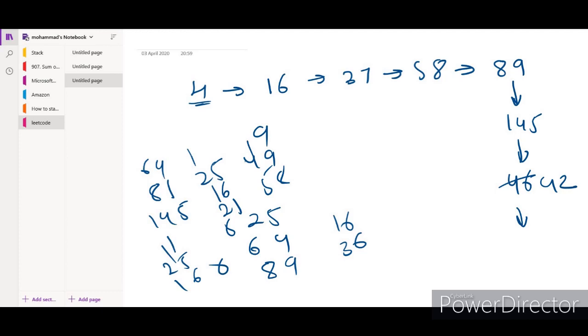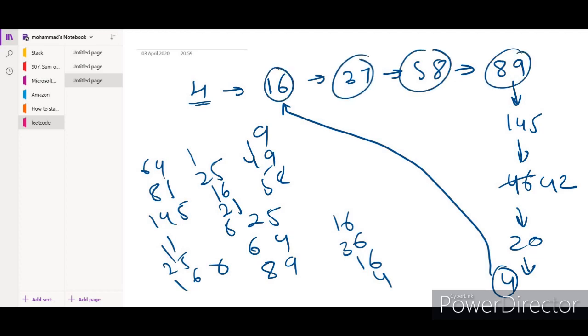Then we get 16 + 4 which equals 20. Next we get 4 here. So 4 is reappearing. The next step will be 16, then 37, then 58, 89, 145, 42, and 20. This cycle will keep repeating itself and will be an infinite loop.